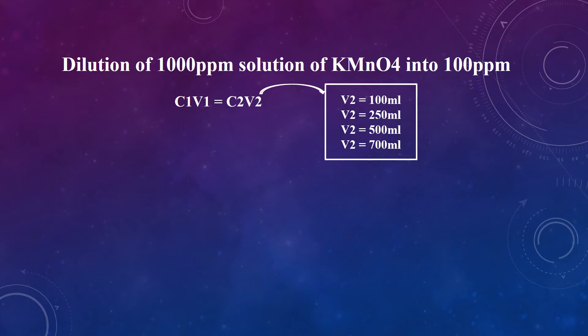You can put any volume in V2 according to the need of the solution. For example, if you want to prepare 100 ml solution, put V2 = 100. If you want to prepare 250 ml solution, put V2 = 250. If you want to prepare 500 ml solution, put V2 = 500. If you want to prepare 700 ml solution, put V2 = 700.